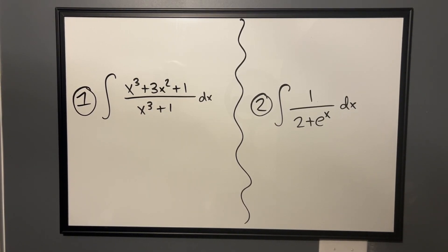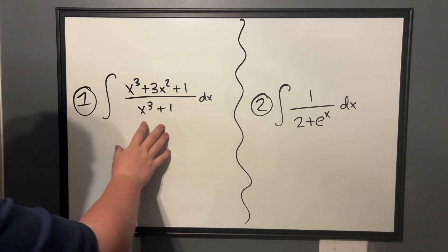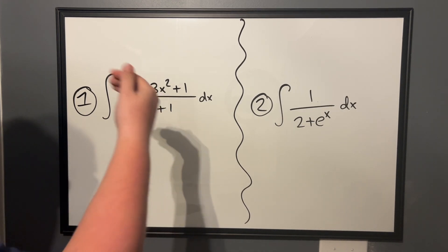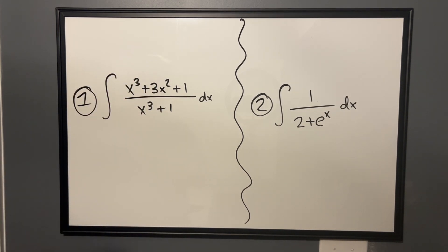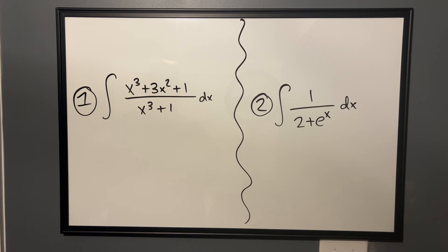Welcome back to Mathematics Lifeline. This is episode 3 of our integration practice series, where I give you two integrals, you try to work them out, and then I will work them out on the board to check your answer. The first integral is the integral of (x³ + 3x² + 1) / (x³ + 1) dx, and the second is the integral of 1 / (2 + eˣ) dx. These are both indefinite integrals, so we're just looking for the antiderivative. Go ahead and pause the video and I'll start them right now.